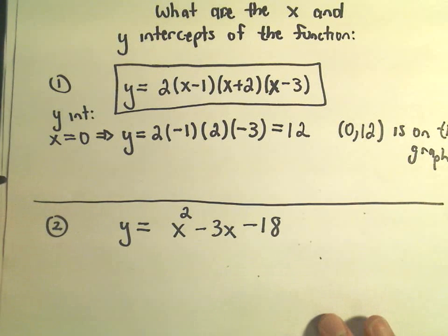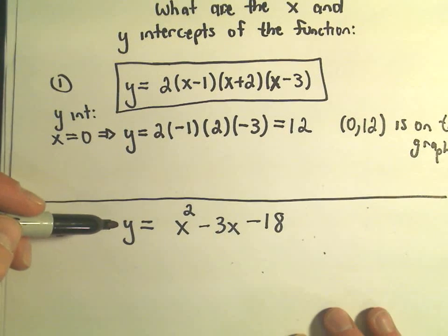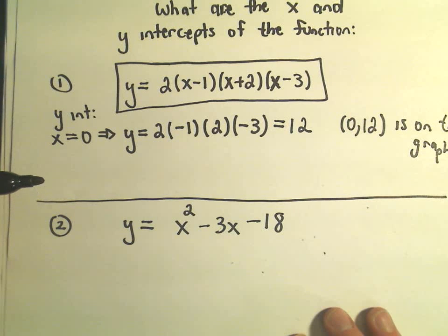Now we're going to do the same thing, we'll just find the x and y intercept of this function, y equals x squared minus 3x minus 18.